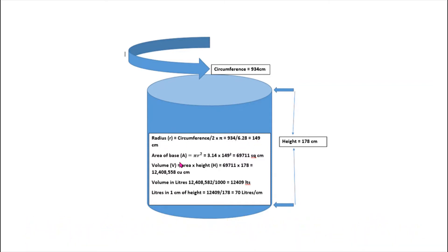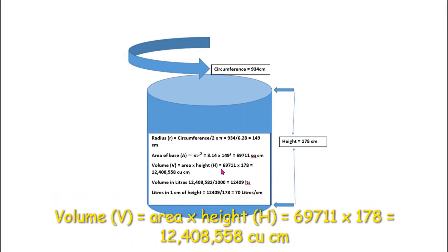The next thing we have to calculate is the area of the base. So we use the formula πr². Pi is approximately 3.14, so we times it by the radius squared, and that gives us 69,711 square centimeters.